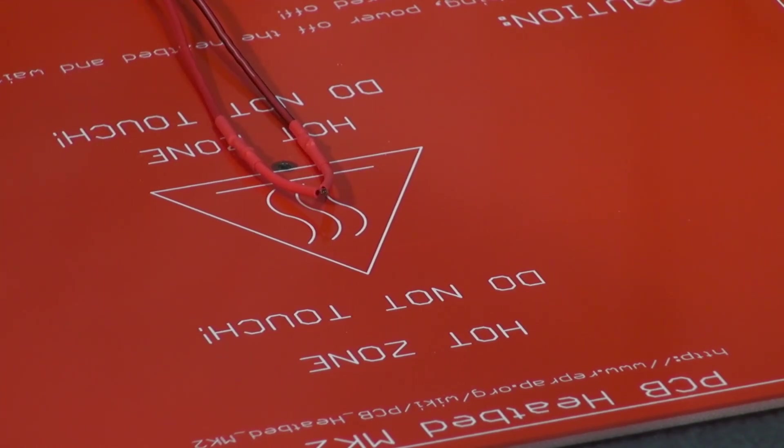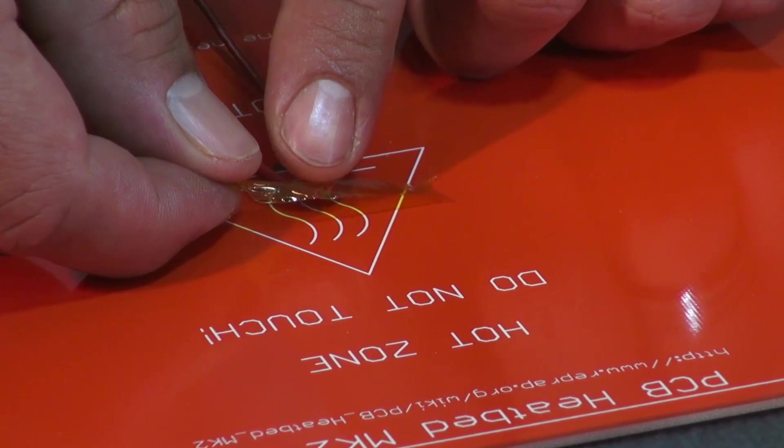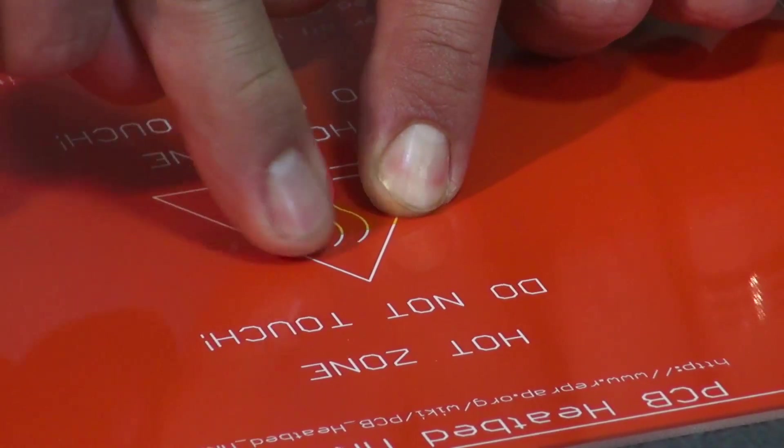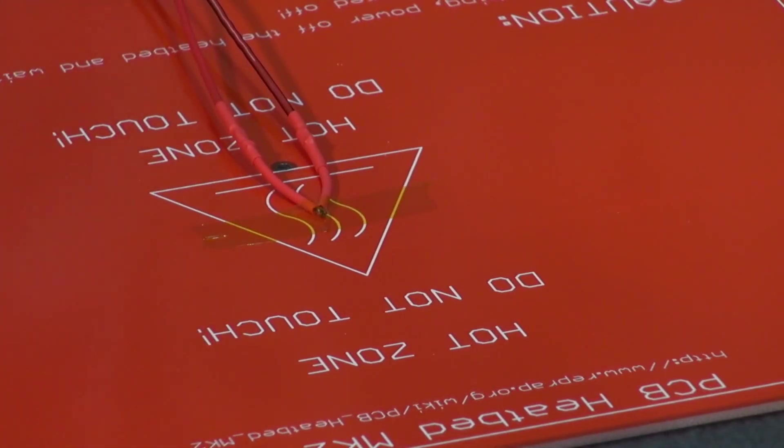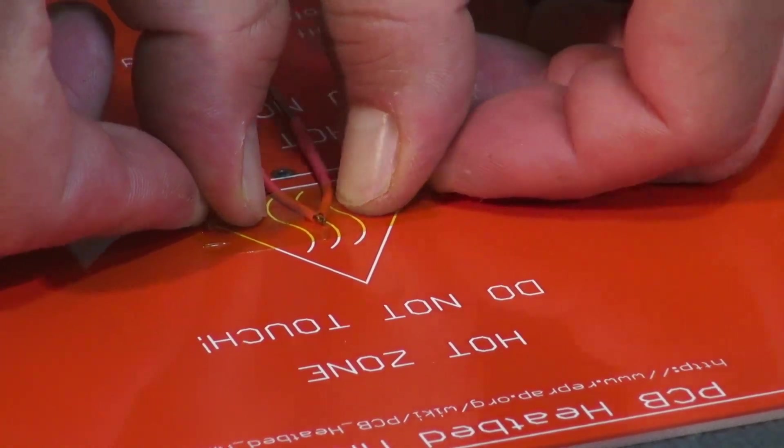Now we're going to secure our thermistor with Kapton tape to the bottom side of the heat bed. The bottom side of the heat bed is the side that does not have the LED. I advise using two strips of Kapton tape this way it's less likely to come loose.